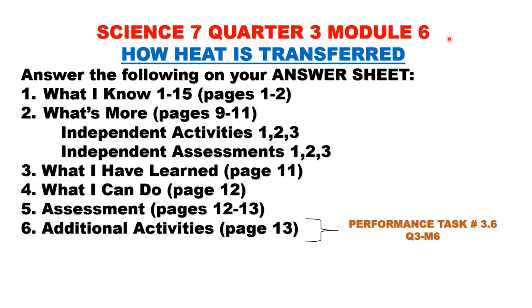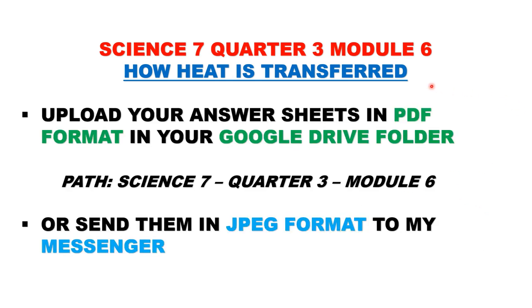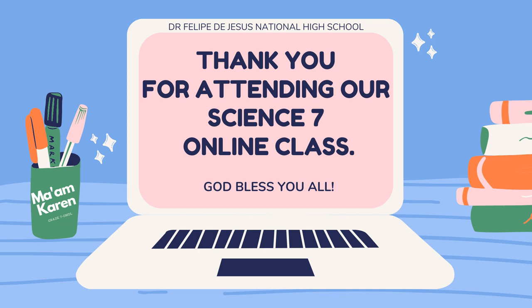For Science 7, Quarter 3, Module 6, How Heat is Transferred, you need to have the following on your answer sheet: 1. What I Know. 2. What's More — answer independent activities 1 to 3 and independent assessments 1 to 3. What I Have Learned. What I Can Do. Assessment. And additional activities, which will be your performance test number 3.6. If you are done with the module, upload your answer sheets in PDF format in your Google Drive folder under Science 7, Quarter 3, Module 6. Or you may send them in JPEG format to My Messenger. Thank you for attending our Science 7 online class. God bless you all.